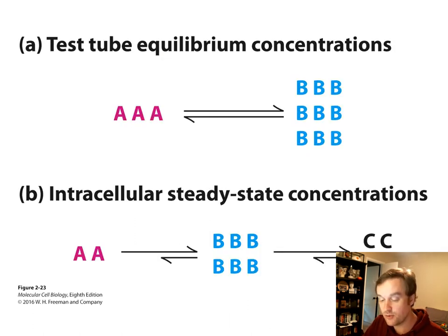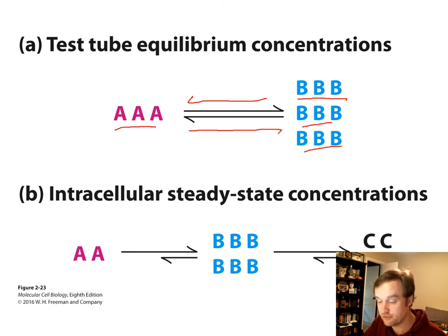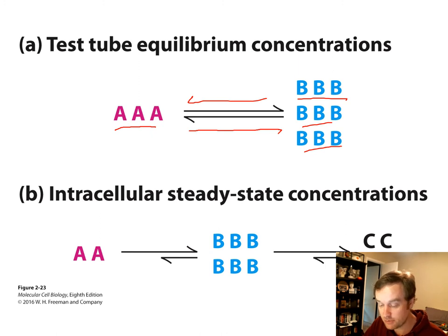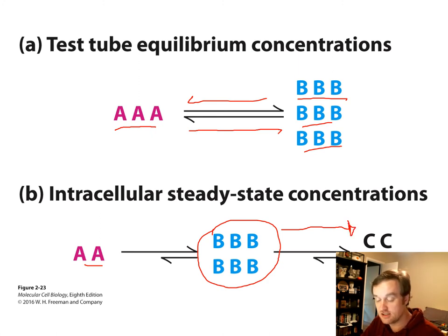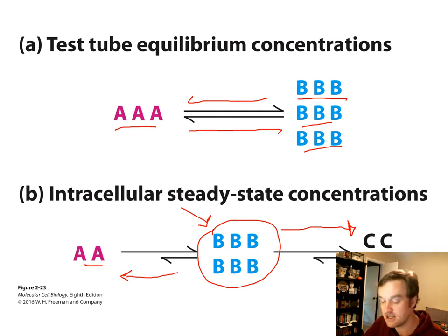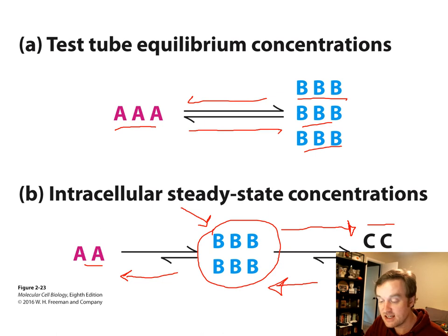In a test tube at equilibrium, product AAA is turned into three products of BBB, and the rate of the forward and reverse are the same. But inside cells, this is generally not the case. In a steady-state pathway, product B is made from product A, but it is further converted to C — a third component — so it moves along this pathway. There aren't enough B's to form equilibrium with A, so it continues being formed into B. Similarly there'll be less C than B, and the rate of back and forth is not held constant, so equilibrium is generally not observed.